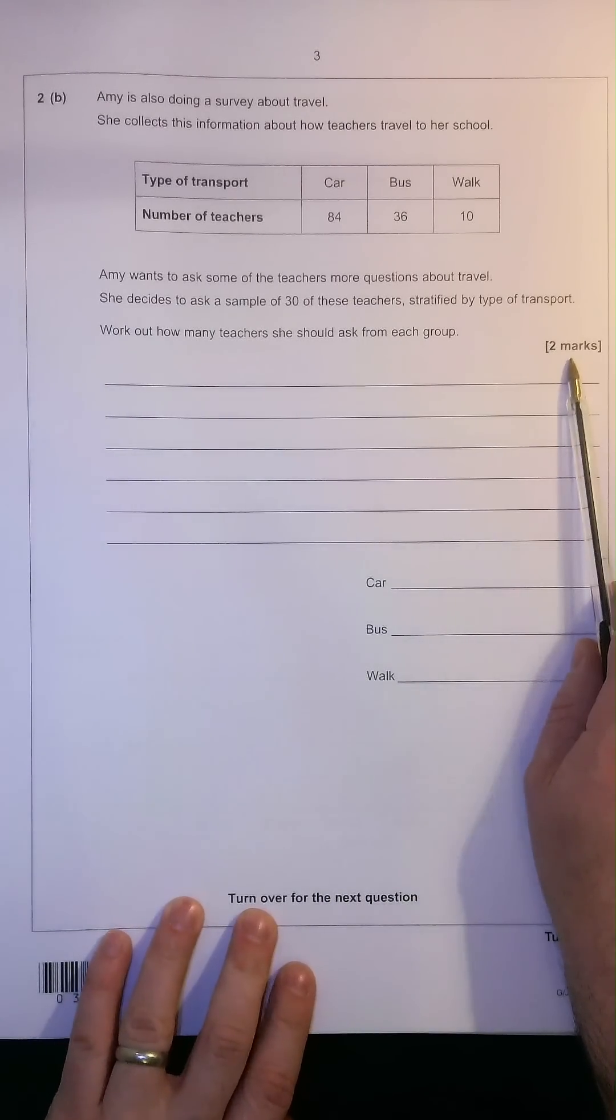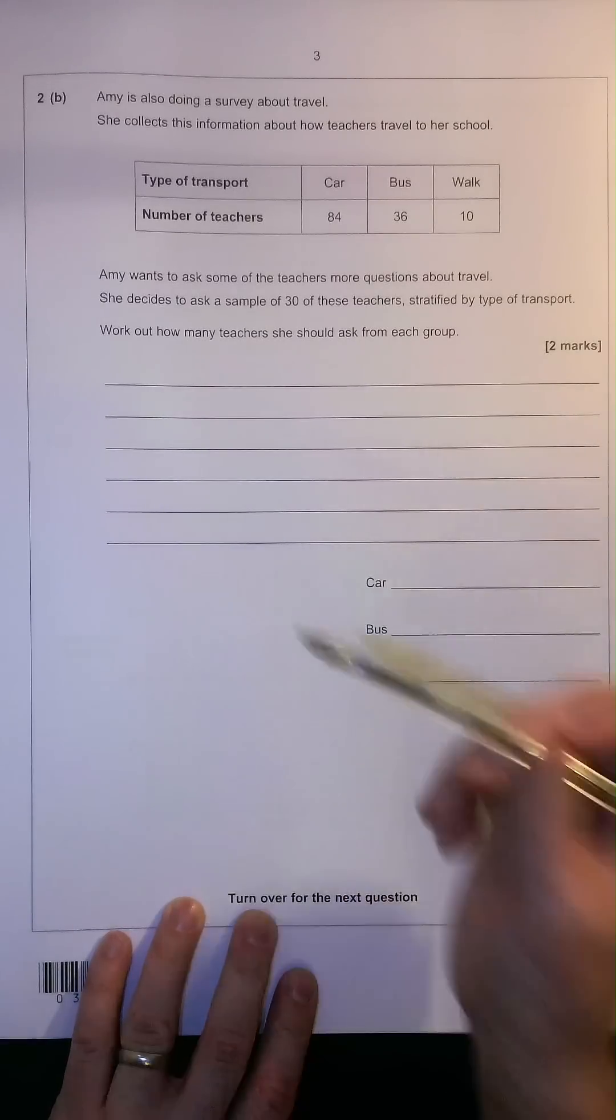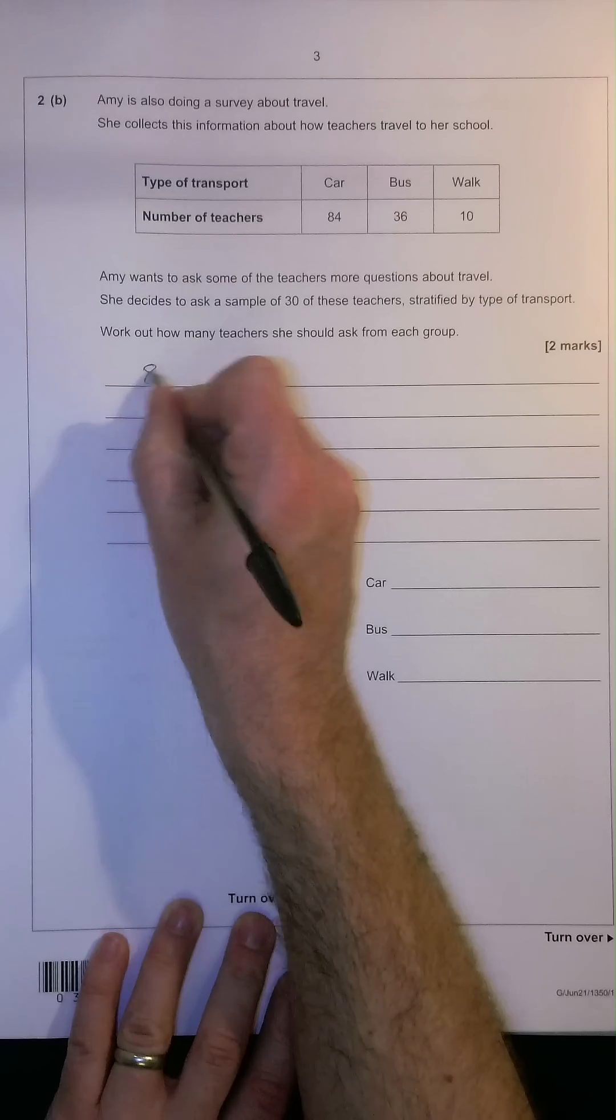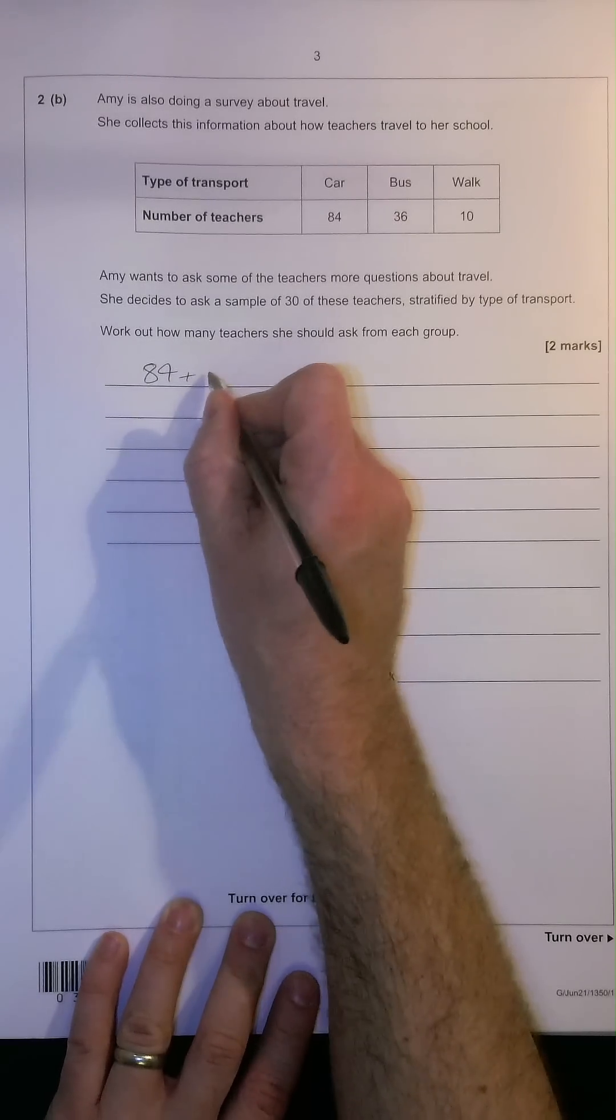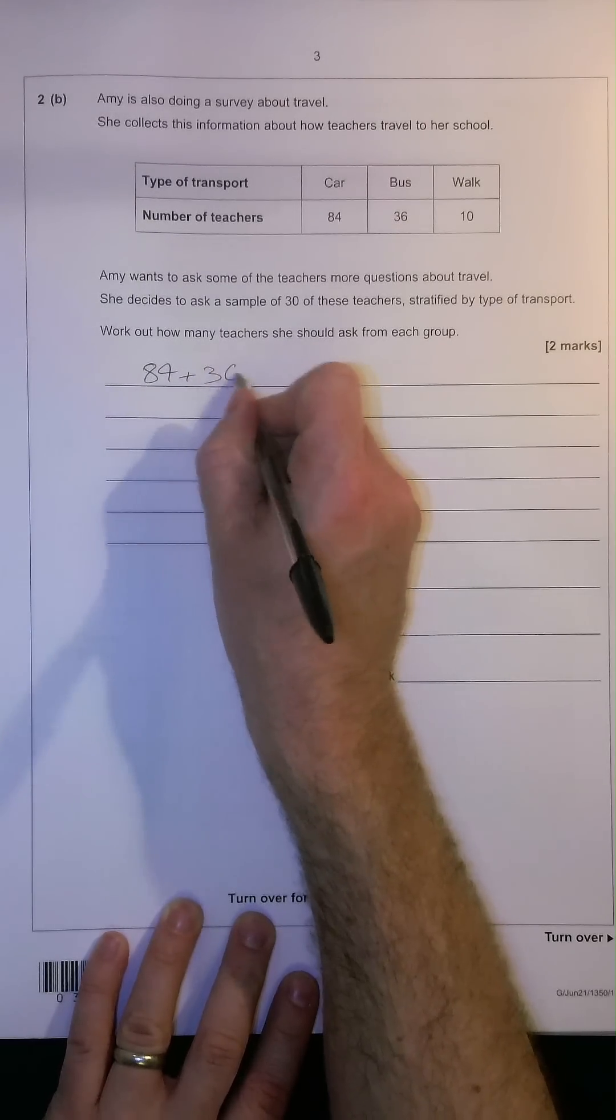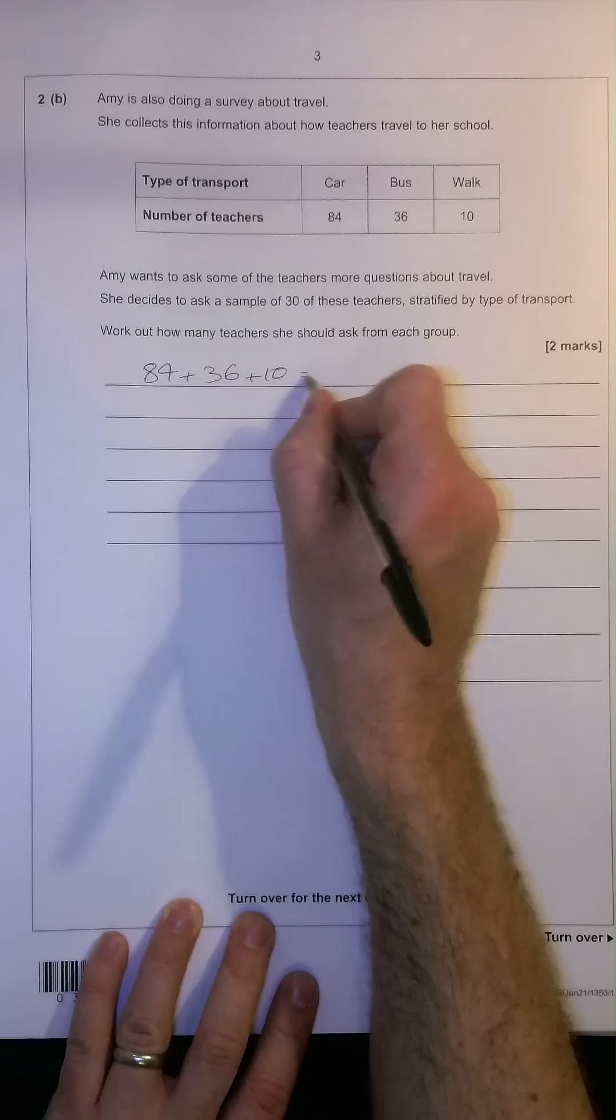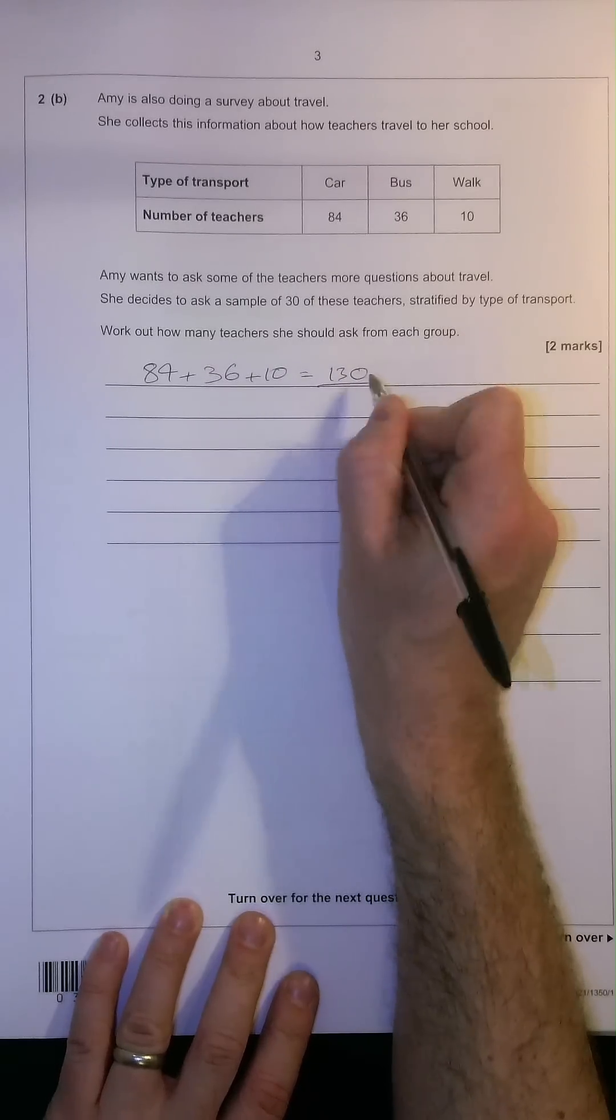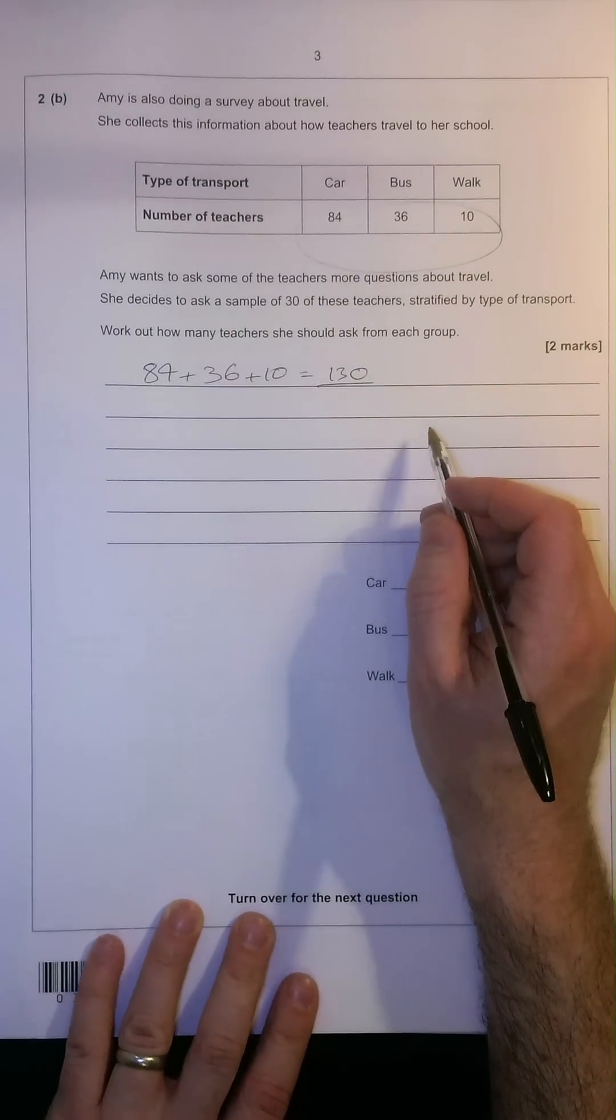So of course this question is worth two marks. First things first, we need to calculate exactly how many people are in the whole sample. 84, 36, 10 equals 130. So there's 130 people in the whole sample.